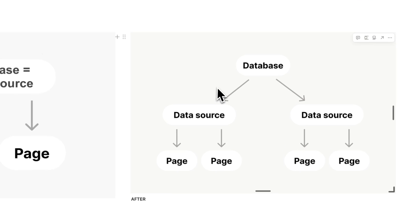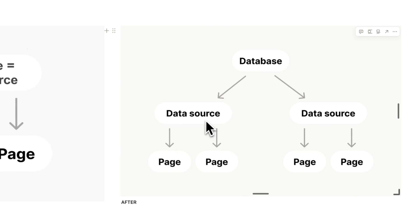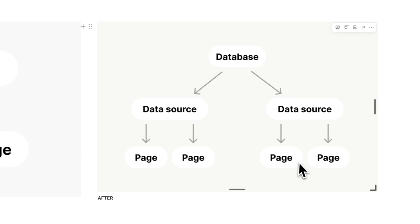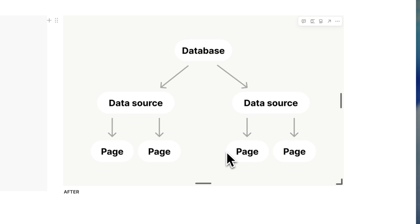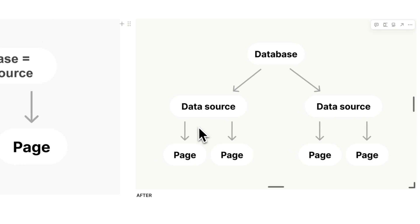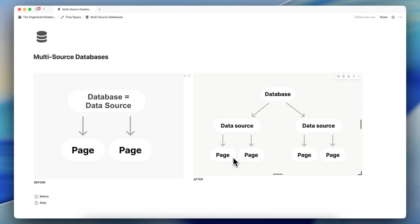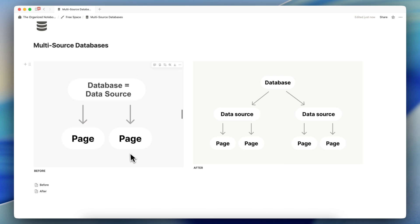Now with this new change, a database can house multiple data sources. So you could have a tasks data source, a projects data source, and a contacts data source inside — all with their different properties, characteristics, and pages. It basically added a whole other layer where you have a bigger container for your data that houses each of your data sources. The easiest way to show this is to demonstrate with actual Notion databases.